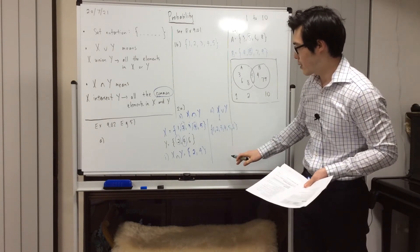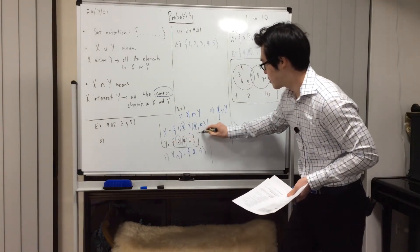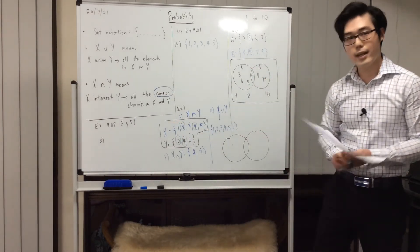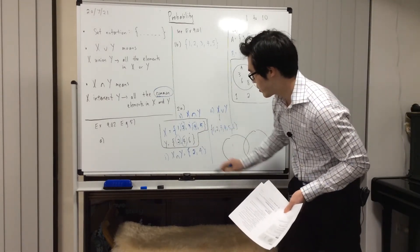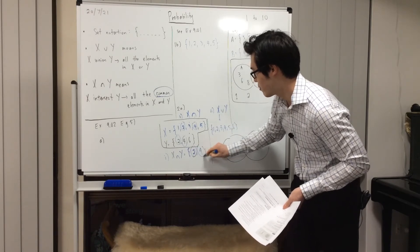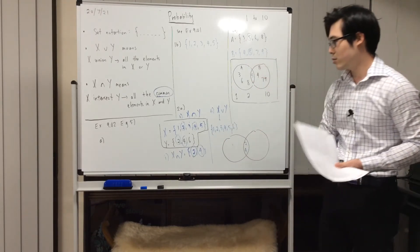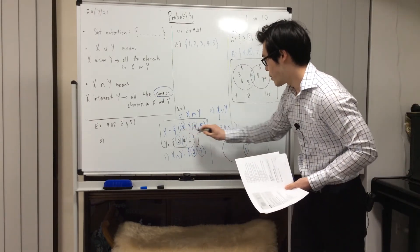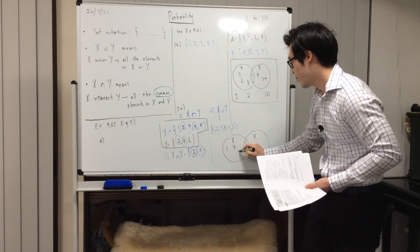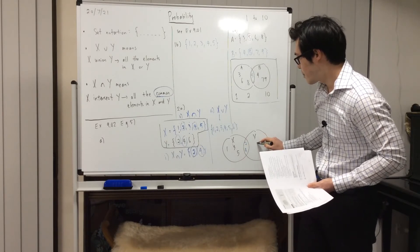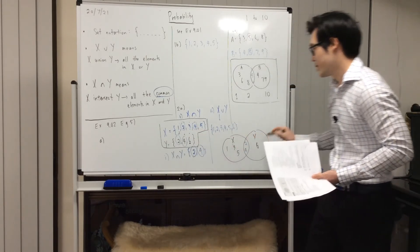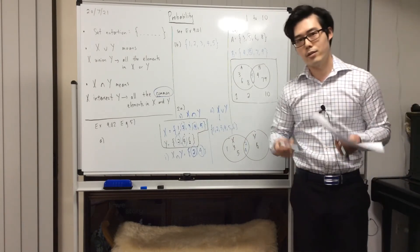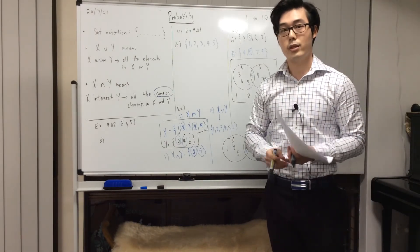To draw a Venn diagram for X and Y, draw two circles. Start with the numbers common to both — which we established are 2 and 4 — and write them in between the circles. For X, write the remaining numbers 1, 3, and 5. For Y, write just the number 6. There are no numbers to write outside the circles here because the question doesn't specify anything else, so it all depends on the context — just read the question carefully.